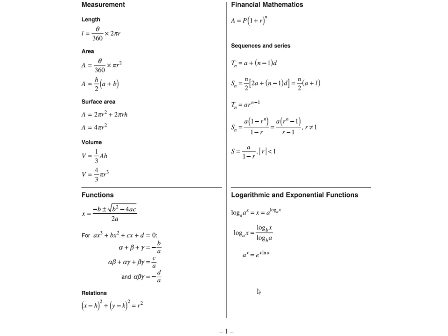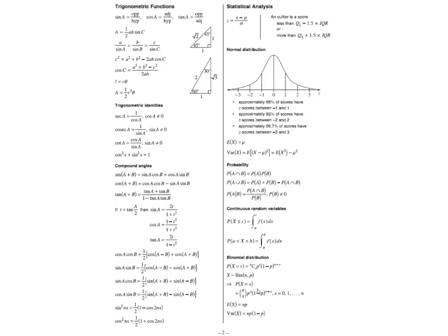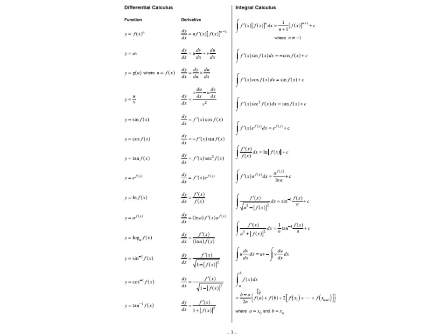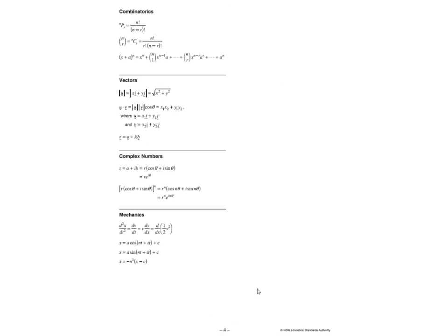This is page 1, page 2, page 3, page 4. By the way, if you are doing Advanced without Extension, you can forget about page 4. There is nothing there for you. It's all about Extension 1 and 2.